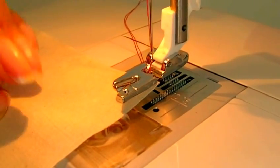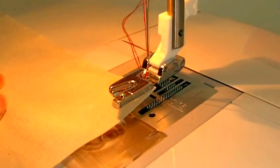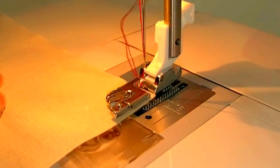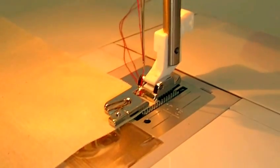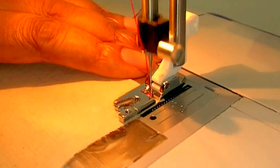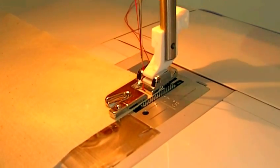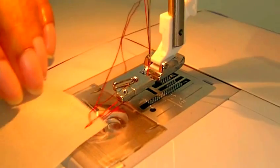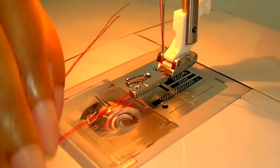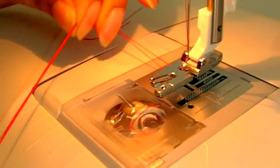What I need to do first is align it to the raw edge and then just stitch a couple of stitches. That's it. And then lift my foot, pull my fabric towards me, and then do not cut your threads because you're going to use it as an anchor.